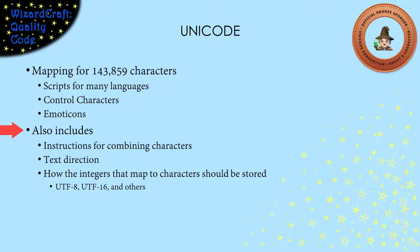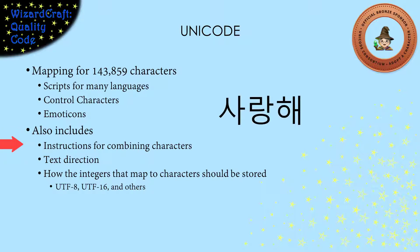Unicode also includes things that are different between different languages. For example, it includes instructions for how to combine characters, like those in Korean where they make one syllable out of a sequence of characters. Unicode can also specify the direction of the text for languages that read either left to right or top to bottom.